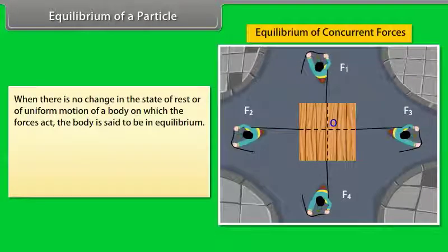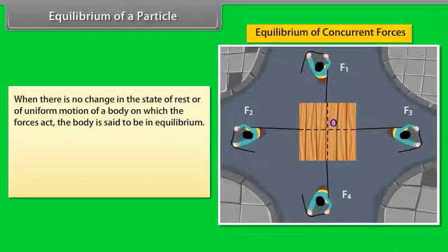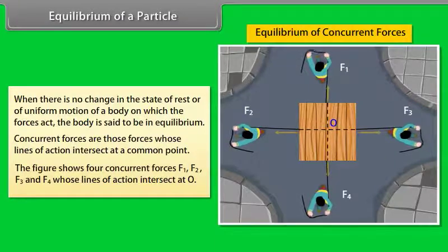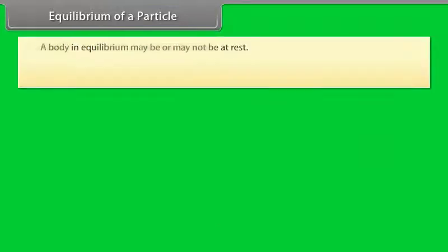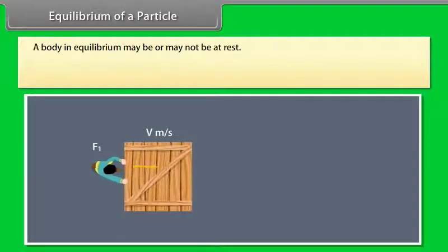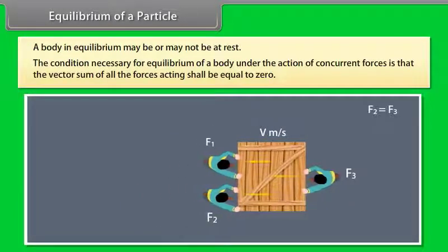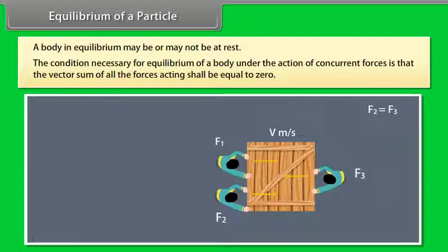When there is no change in the state of rest or of uniform motion of a body on which forces act, the body is said to be in equilibrium. Concurrent forces are those forces whose lines of action intersect at a common point. A body in equilibrium may or may not be at rest. The condition necessary for equilibrium under concurrent forces is that the vector sum of all the forces acting shall be equal to zero.